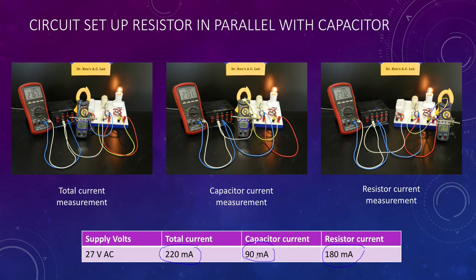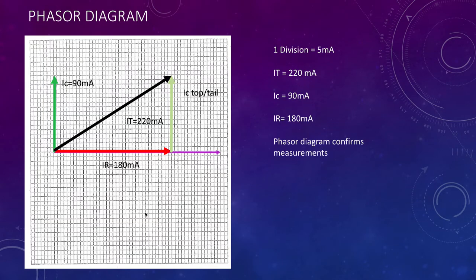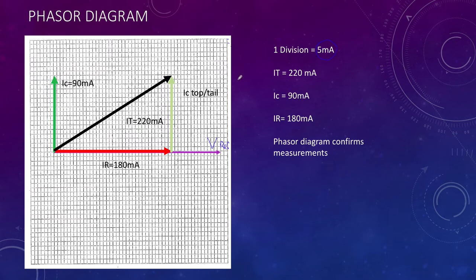There's a phase shift relationship: the capacitor current is at 90 degrees to the resistor current. To verify that these currents work out to the total current, we'll do a phasor diagram. Our voltage is on the horizontal as the reference, and I've chosen a scale of 5 milliamps per division.